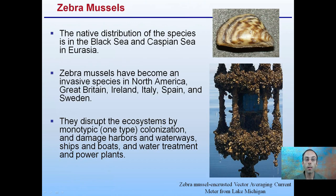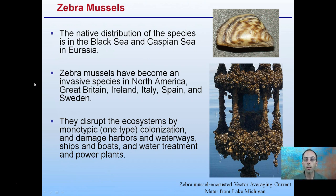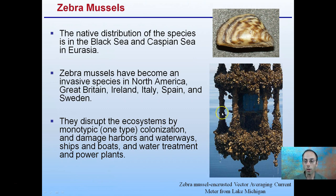Another organism that's expanding is zebra mussels. Their native distribution is in the Black Sea, Caspian Sea, and Eurasia. Zebra mussels have become invasive species in North America, Great Britain, Ireland, Italy, Spain, and Sweden. They rarely appear alone — they colonize an area, disrupting ecosystems by creating monotypic single-species colonization and damaging harbors, waterways, ships, boats, water treatment facilities, and power plants.